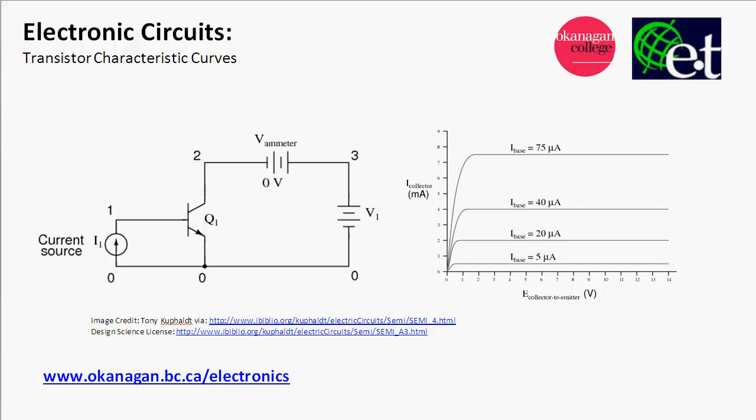David Williams here from the Electronic Engineering Technology Department at Okanagan College, and this video is about transistor characteristic curves. A transistor characteristic curve is a term to describe the relationships between the voltage between the collector and the emitter, and the current through the collector, as well as integrating the current into the base into that picture as well.